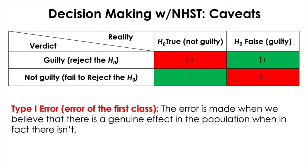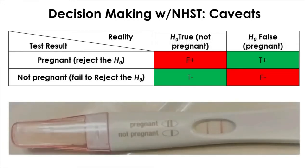However, there are other situations where minimizing false negatives becomes more desirable, such as in medical screening. Consider a hypothetical example where you want to find out whether you or your partner is pregnant. Here, pregnant is the alternative and not pregnant is the null. You test using one of these pregnancy screening kits, which work by detecting the hormone HCG in a urine or blood sample secreted by the placenta after the fertilized egg implants in the uterus.